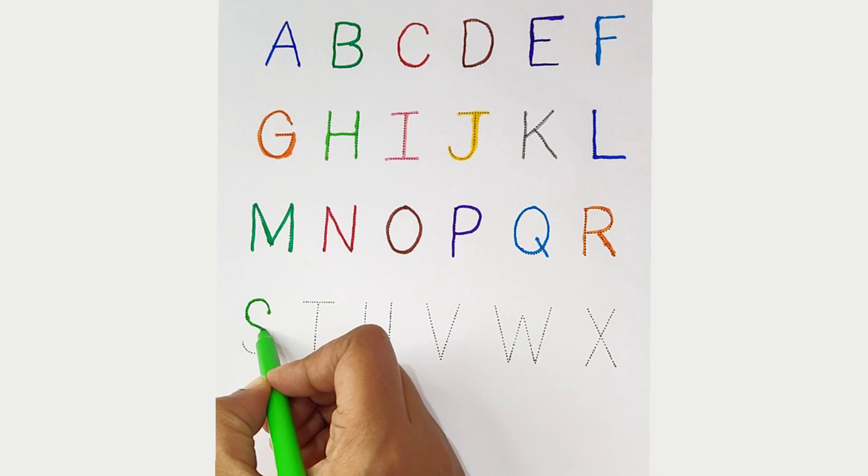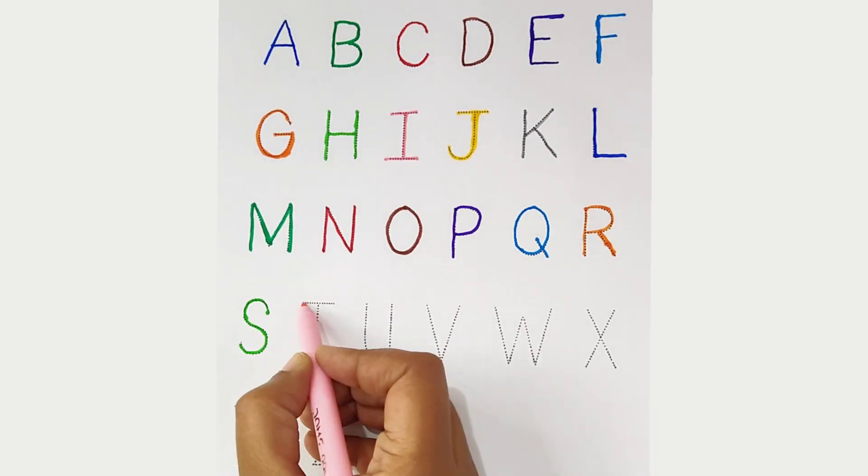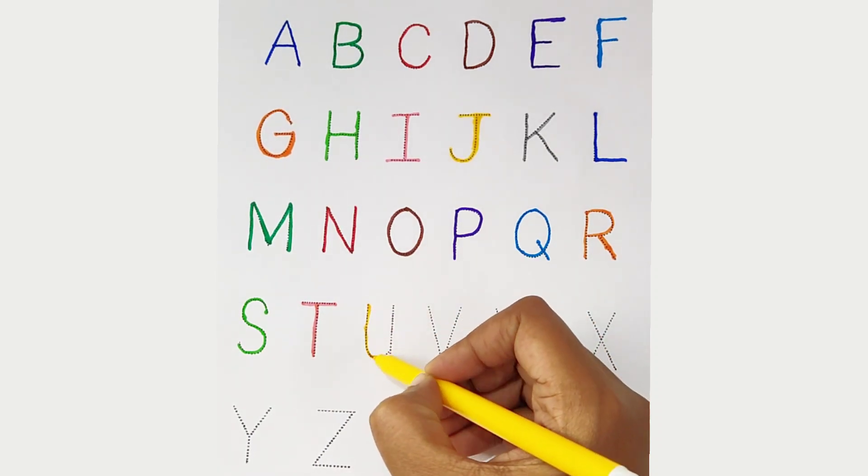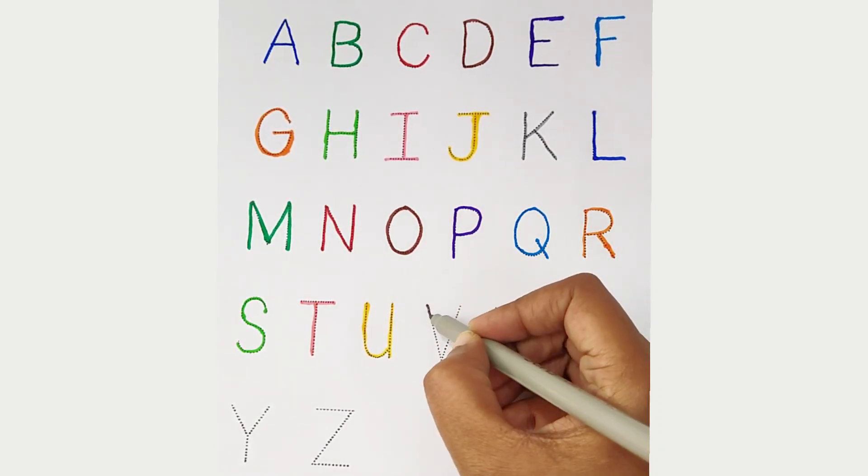S is for sun, s-s-s-sun. T is for table, t-t-t-table. U is for unicorn, u-u-unicorn.